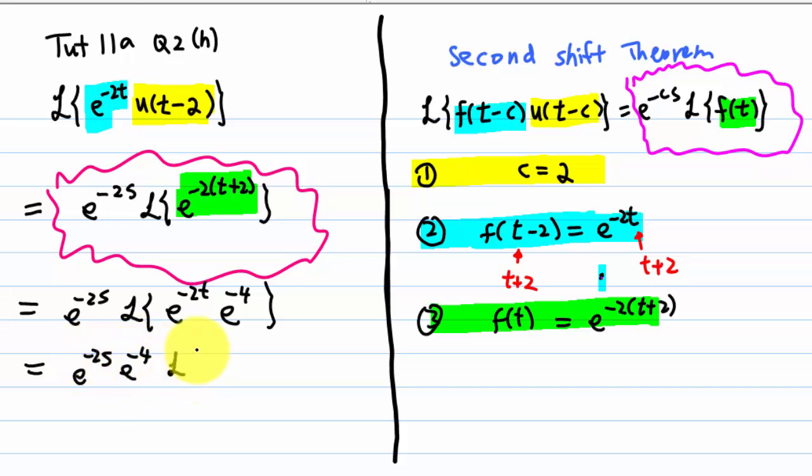And then, you have Laplace transform of e to the minus 2t, which is equal to e to the minus 2s plus 2 times Laplace transform of e to the minus 2t, which is 1 over s plus 2.